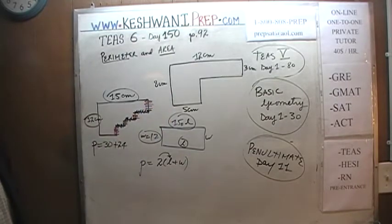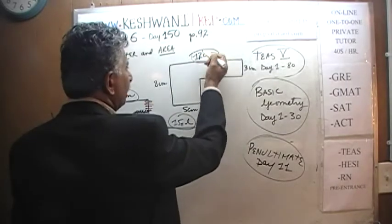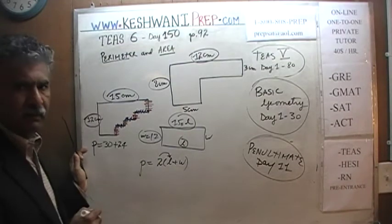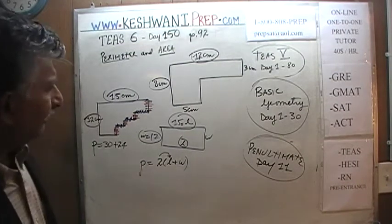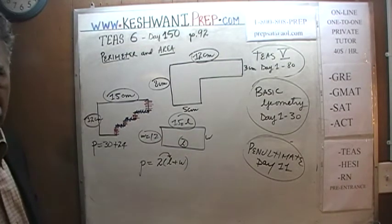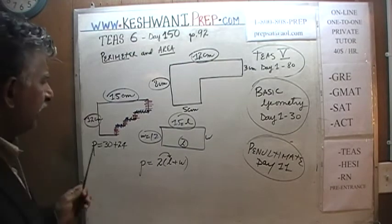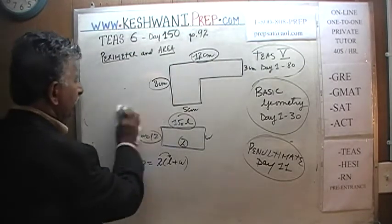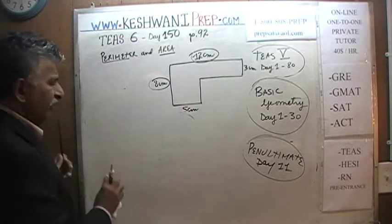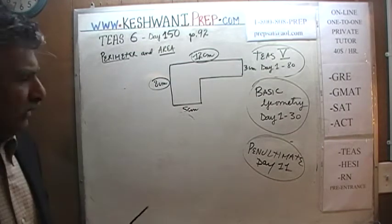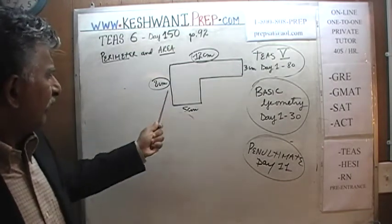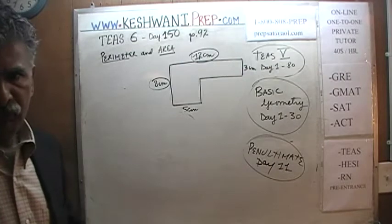The same exact thing applies here. This has a length of 12 and a width of 8. 12 plus 8 is 20, so the perimeter is 40. You don't have to turn it into a complicated process. It should take no more than two or three seconds — 12 plus 8 is 20, so it's two times 20, which is 40.